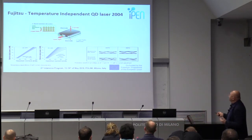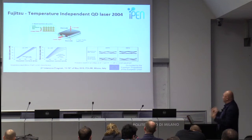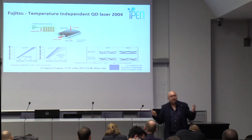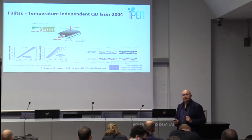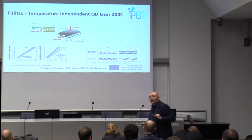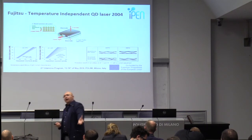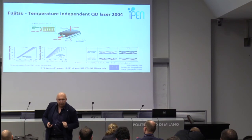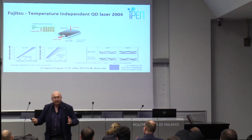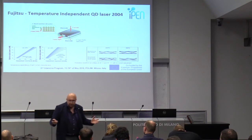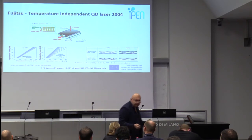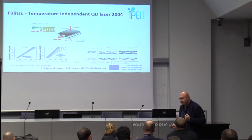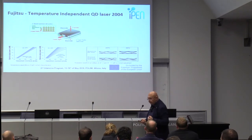Temperature stability is especially important for 5G systems. In data centers, temperature is well controlled, but 5G systems are distributed everywhere and you cannot control the temperature. You need the same device performance over a very wide temperature range — this is one of the key advantages of quantum dot devices.